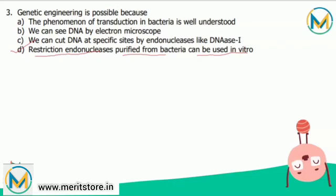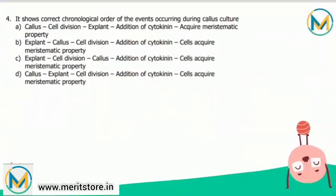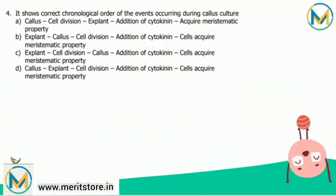Next question: which shows the correct chronological order of events occurring during callus culture? Callus culture is the formation of new plants from few cells obtained from a desirable plant. A small piece of the plant is taken and placed in a nutrient medium — this small piece is called the explant. The explant then undergoes cell division to form an undifferentiated mass of cells called the callus.